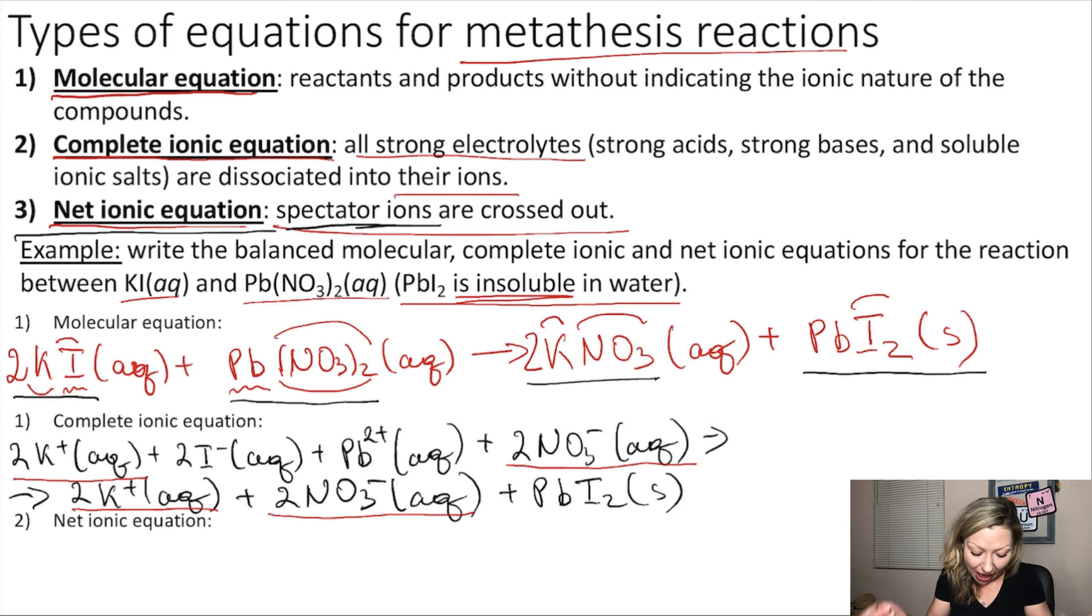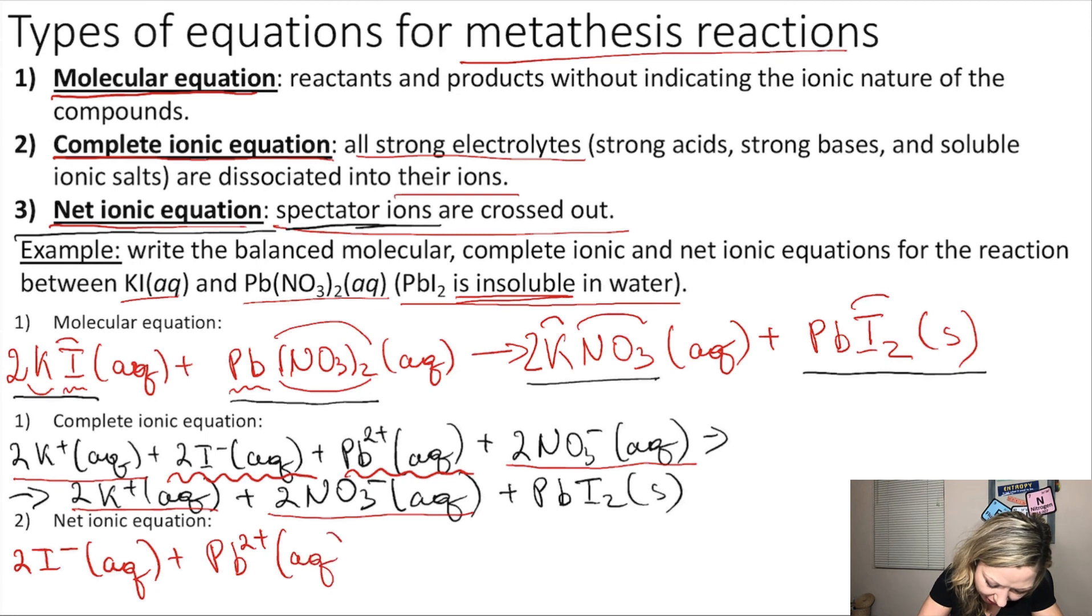So now I have to cross out in my net ionic equation the potassium ions and the nitrate ions. I only have to use the iodide ions, 2I- which is aqueous, plus the lead ions, Pb2+, which is aqueous on the reactant side. And I'm going to have one product, which is the lead iodide, PbI2, and this is my solid.